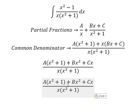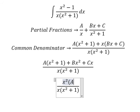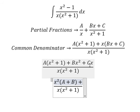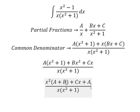Now we need to arrange based on the term of x. About x squared, we have A multiplied by x squared and B multiplied by x squared. About x, we have Cx. About the constant, we have A.